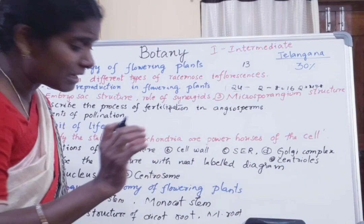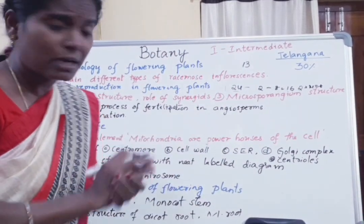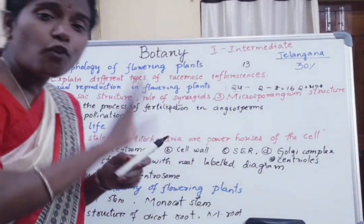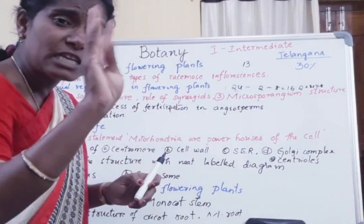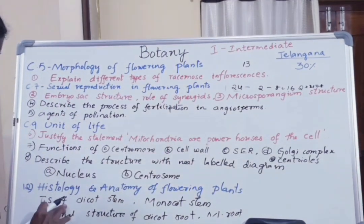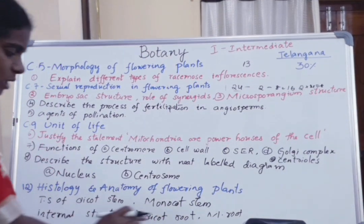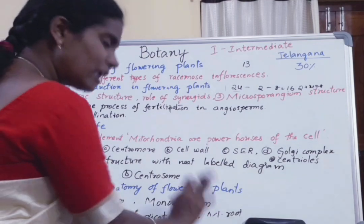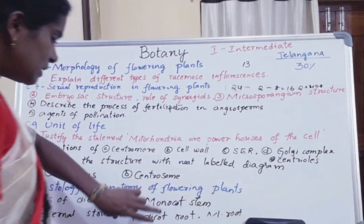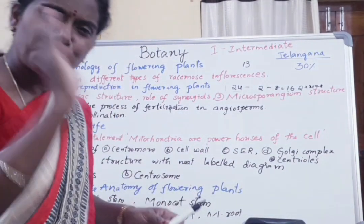Coming to the 12th chapter, only four long answers need to be read. They are: transverse section of dicot stem, monocot stem, and internal structure of dicot root and monocot root. So from each chapter, 4 essay questions are definite.